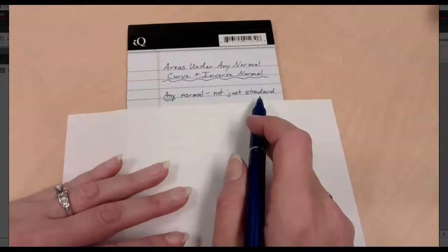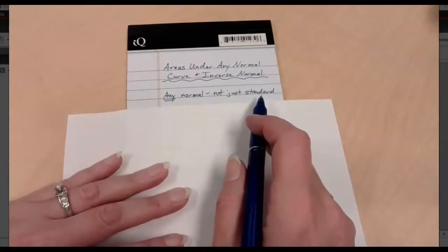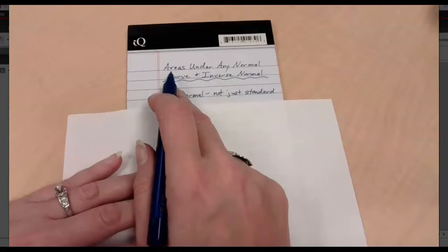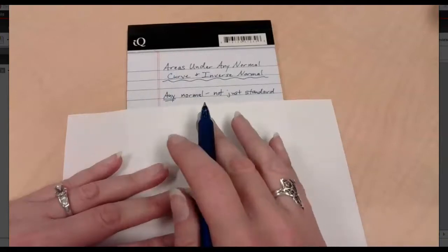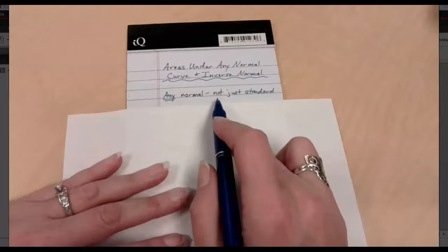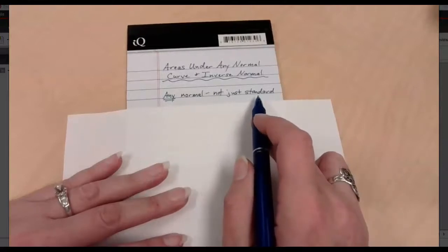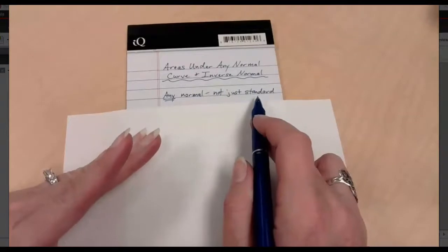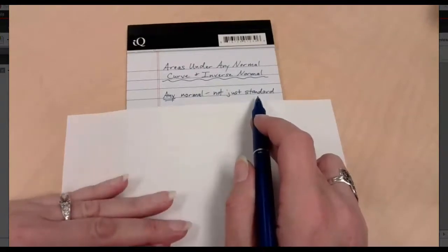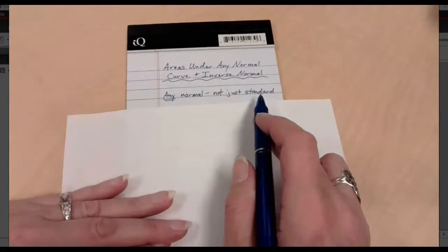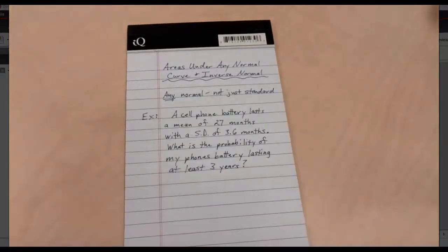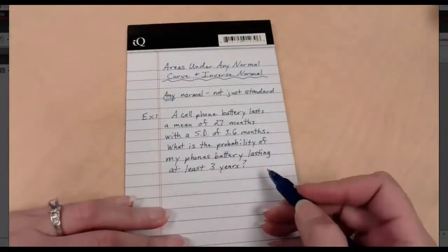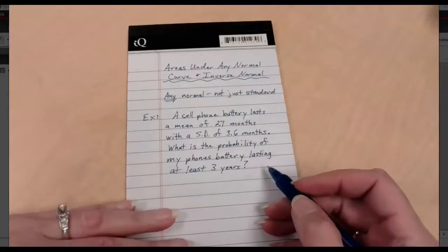Once upon a time in a land far, far away, there was no technology. And in order to find anything regarding areas or probabilities with normal curves, you had to be able to look things up on a table. And the table only did standard normal. Everything had been standardized.